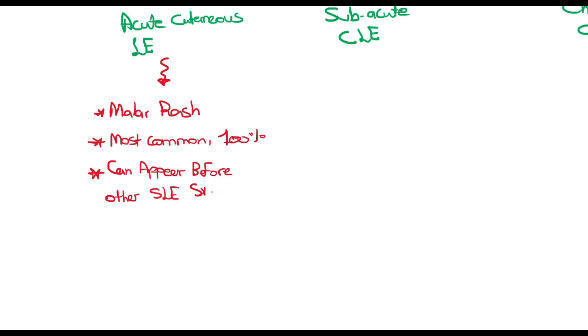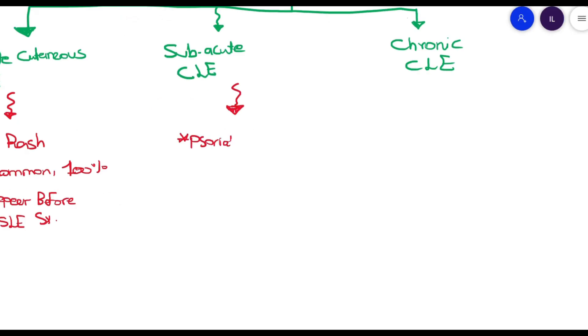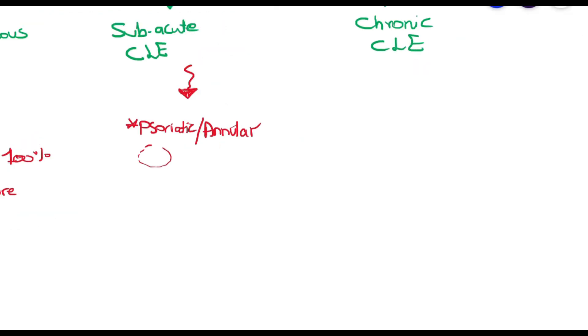Next we have the subacute cutaneous lupus erythematosus. It is the least common among these and the least to be asked about but still you need to know it. It's a psoriatic annular-like rash that can be confused with psoriasis especially since it has similar locations in the shoulders and neck and is present in around 50 percent of the patients.